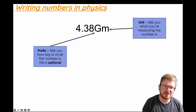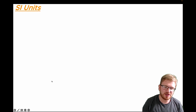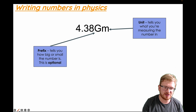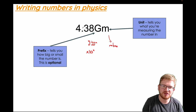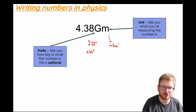In this example, this G is a symbol which means giga. It means times 10 to the power 9. And then the unit, in this case, is M for metres. So this is telling us that it is 4.38 times 10 to the power of 9 metres — this is going to be a length in this case.